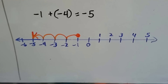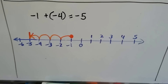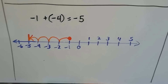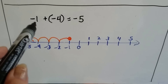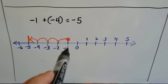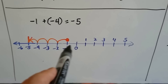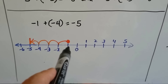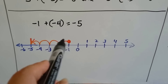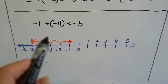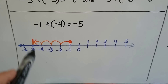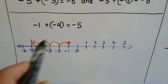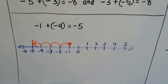Now let's look at what adding two negatives looks like on a number line. If we're at negative one — right here to the left of zero — and we add negative four to it, we go one, two, three, four further to make a bigger negative number: negative five.